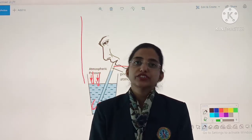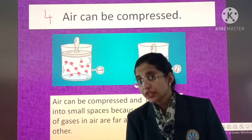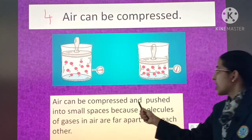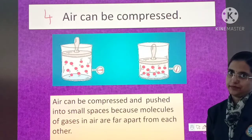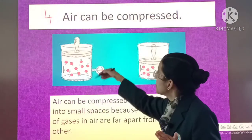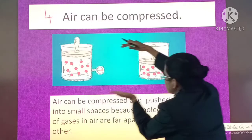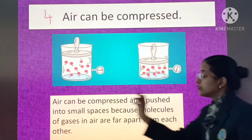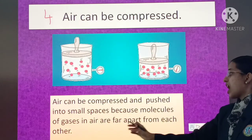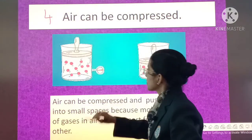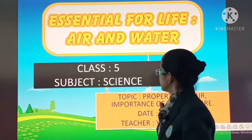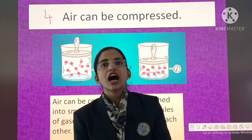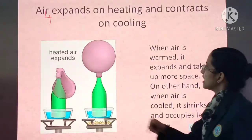Now comes our fourth property: air can be compressed. Air can be compressed and pushed into small spaces because molecules of gases in air are far apart from each other. They are very far from each other, but when compressed, the space between them is less. This is how air can be compressed.